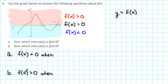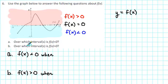Similarly, when f of x is greater than 0, the y values are greater than 0. Where are the y values greater than 0? That's above the x-axis. So when you see f of x is greater than 0, be thinking above the x-axis. For part a, over which intervals is f of x less than 0? We want to be thinking: what are the values of x for which the graph is below the x-axis?